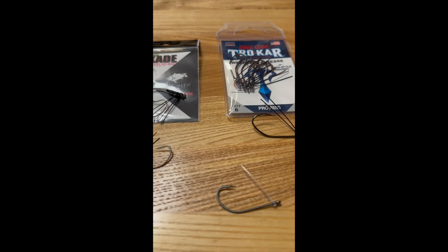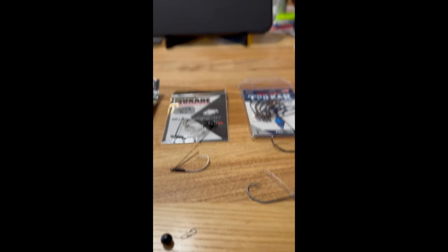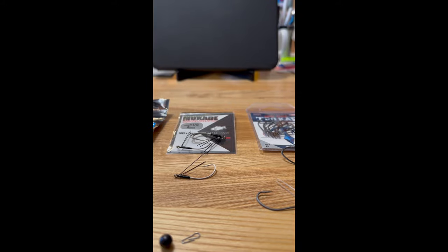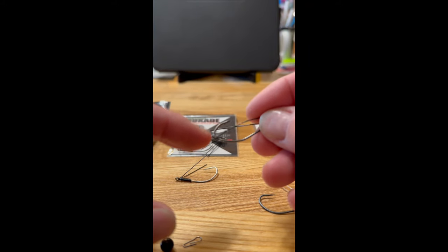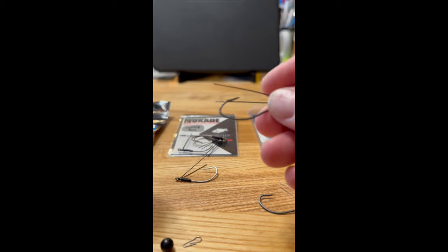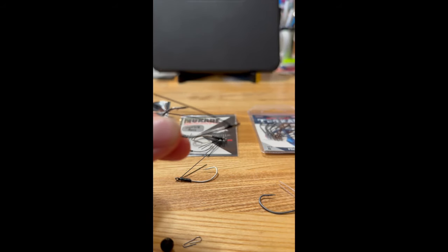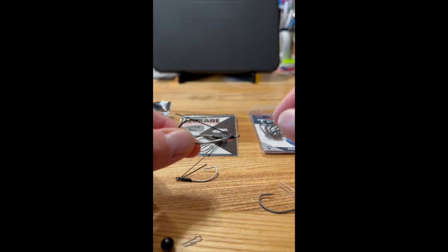I like the hook itself. I like the bend. I like the way it hooks up on fish. The problem is the weed guard is just way too flimsy on it. It really doesn't do anything, and when it bends out of the way, it just bends and it stays. It's just not very functional.